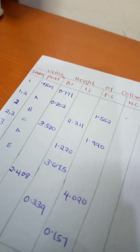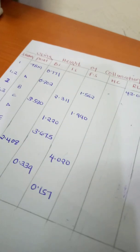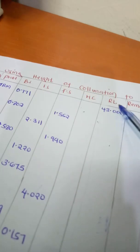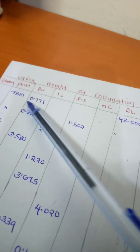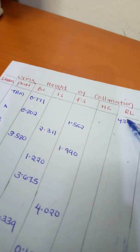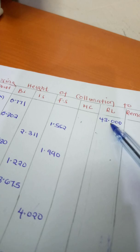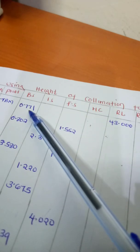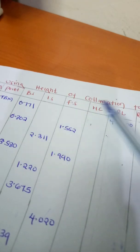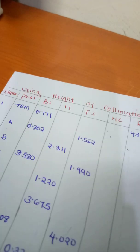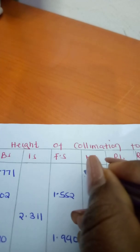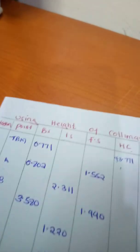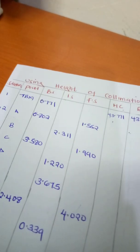We are given the reduced level as the temporary benchmark — our reduced level is 43.00. To find the height of collimation, it will be the reduced level plus the backsight, so 43 plus 0.771, which gives us 43.771.